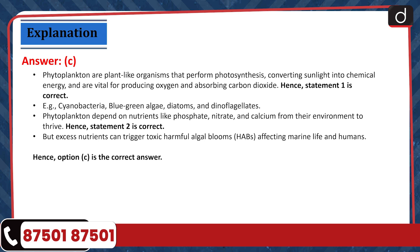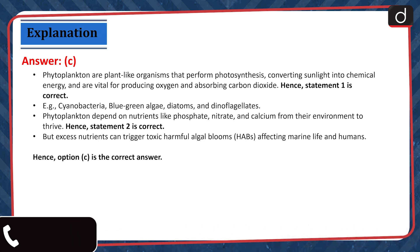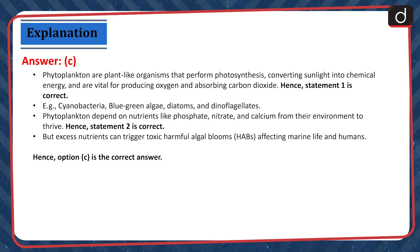The correct answer is option C. Phytoplankton are plant-like organisms that perform photosynthesis, converting sunlight to chemical energy and are vital for producing oxygen and absorbing carbon dioxide. Hence, statement 1 is correct. Examples include cyanobacteria, blue-green algae, diatoms and dinoflagellates. Phytoplankton depend on nutrients like phosphate, nitrate and calcium from their environment to thrive. Hence, statement 2 is correct. But excess nutrients can trigger toxic harmful algal blooms or HABs, affecting marine life and humans. Hence, option C is the correct answer.